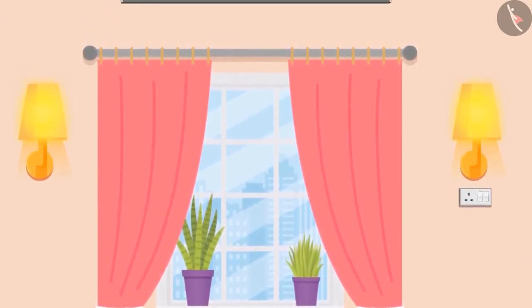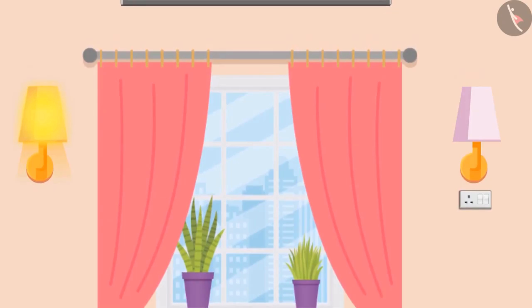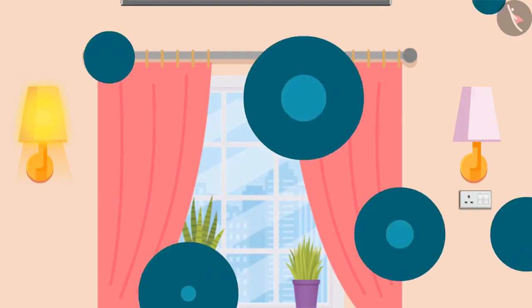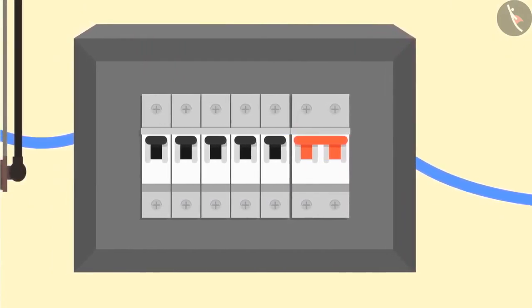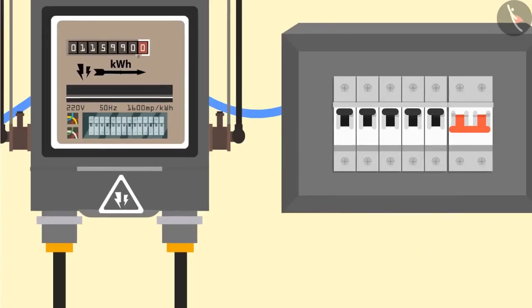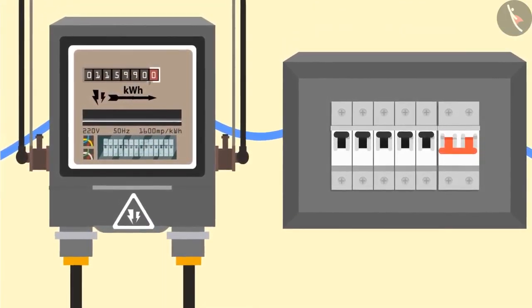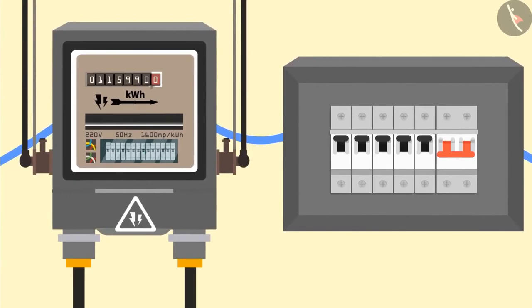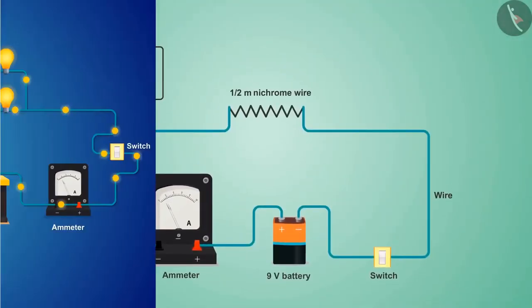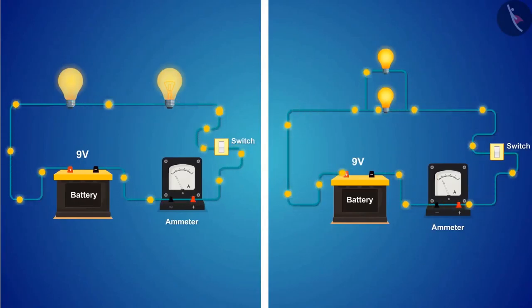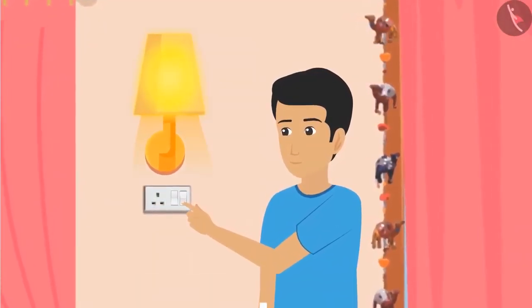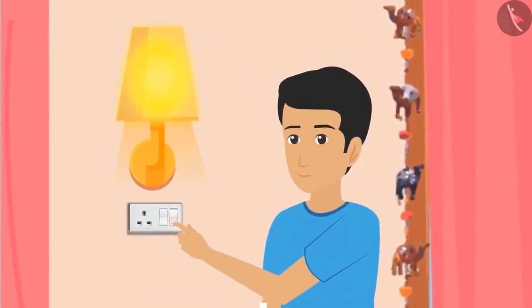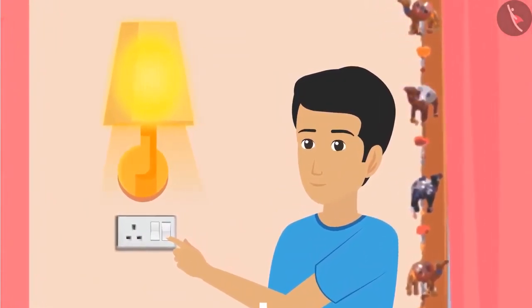This is the reason that all the electrical appliances in our house are connected in parallel — so that every appliance can get the current according to its resistance, and the malfunction of one appliance will not affect the other. Similarly, fuses are placed in series so that all the electric current passes through them, and at the time of a short circuit, no other device gets damaged as the fuse stops the electricity supply. In today's video, we found out the factors on which resistance depends and the different ways of connecting resistance in the circuit.